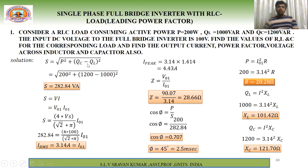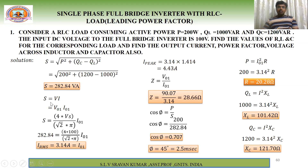The apparent power S = √(P² + (QC − QL)²). P = 200 W, QC = 1200 VAR, QL = 1000 VAR. Note that in leading case QC is greater than QL, so we write QC − QL; in lagging case QL > QC. Substituting: S = √(200² + (1200−1000)²) = √(40000 + 40000) = 82.84 VA.